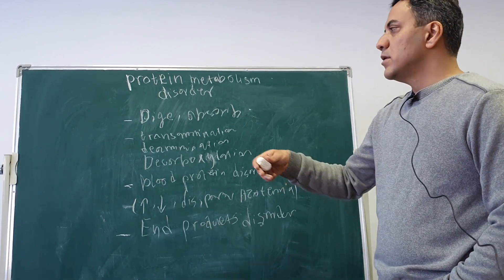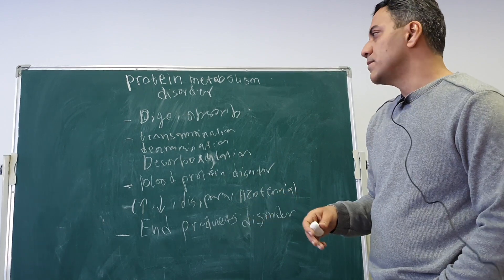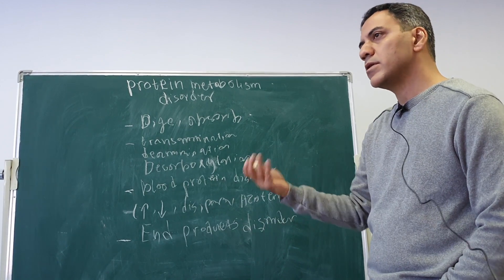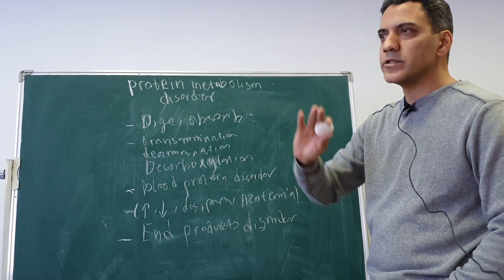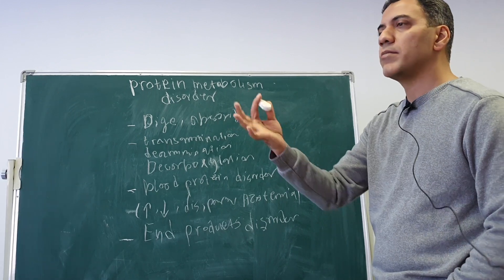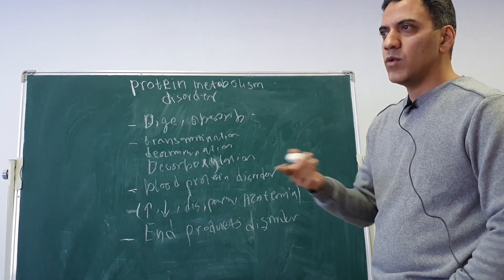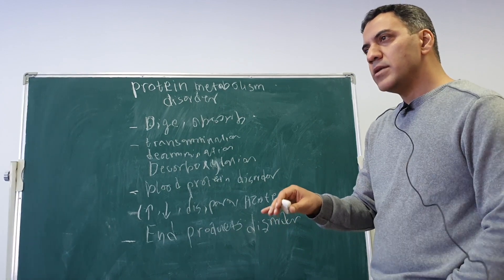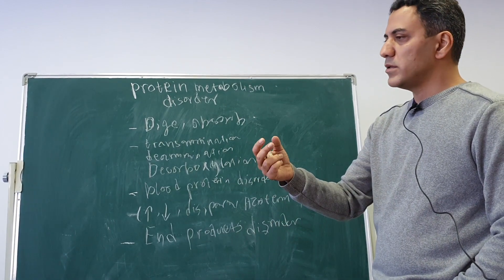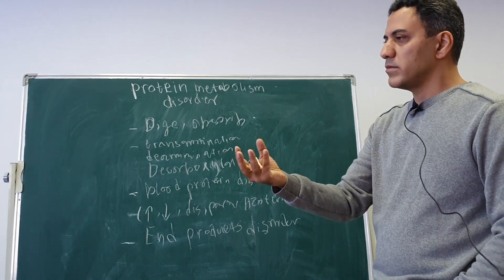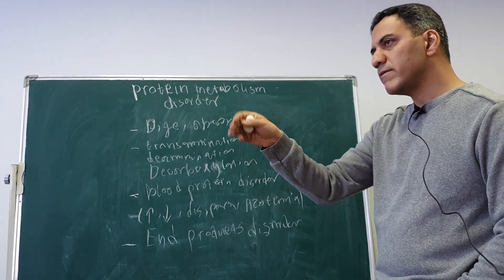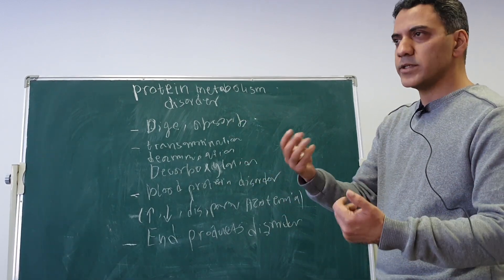If digestion and absorption are normal, and our amino acids are digested and absorbed, they will go into our body. Mainly, they will first go to the liver. The liver takes many amino acids because the main organ in which most proteins are produced is the liver. That is why the liver takes a large amount of amino acids.